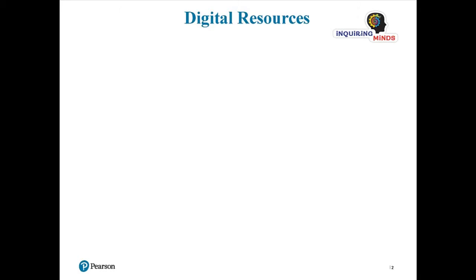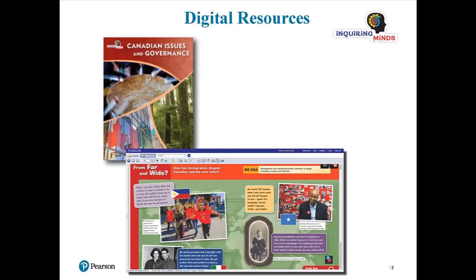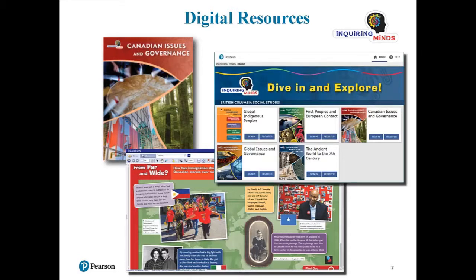The three digital components of this program are the Online Student eText, which is a digital version of the print student resource; the Online Teacher eGuide, which is the student eText with embedded teacher content at point of use; and the Online Companion website, which is an online repository of engaging resources designed to motivate students and help to develop their thinking and inquiry skills. These resources follow the same structure at all grade levels.